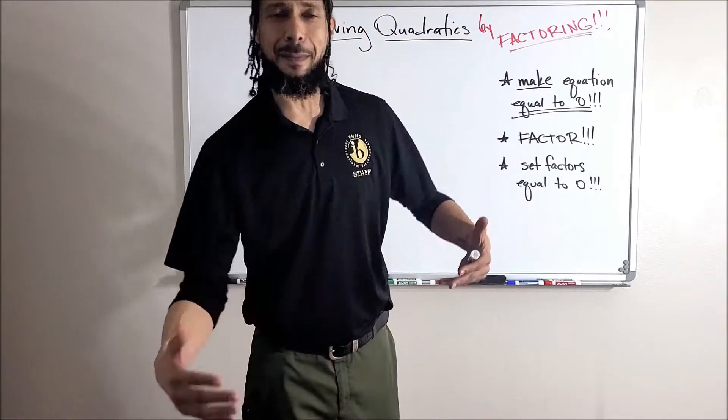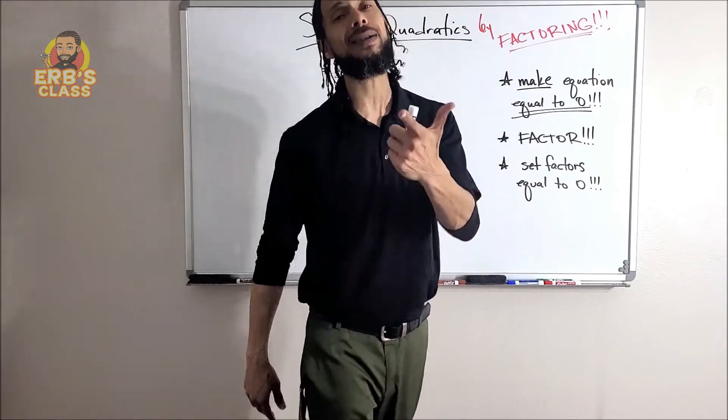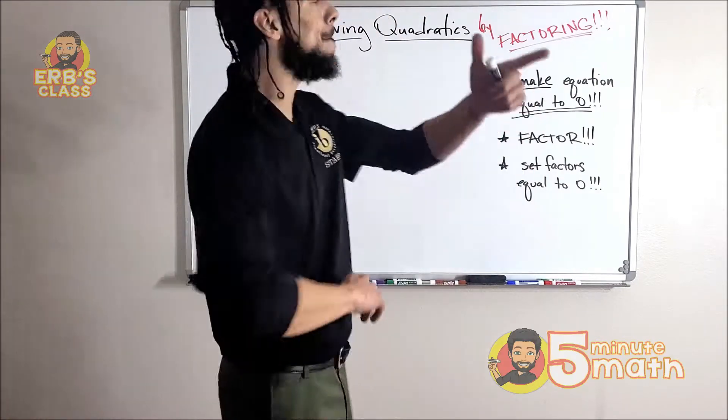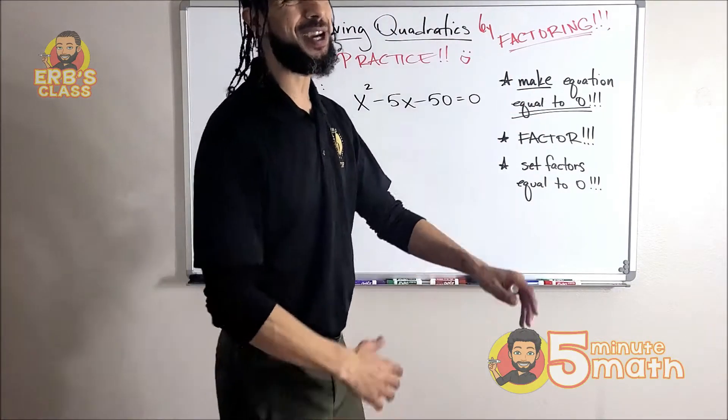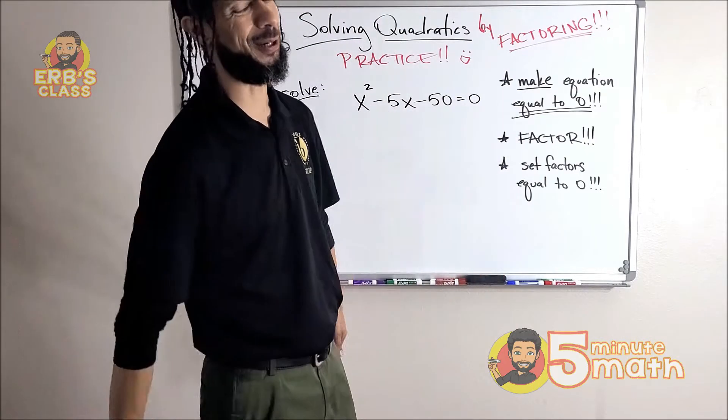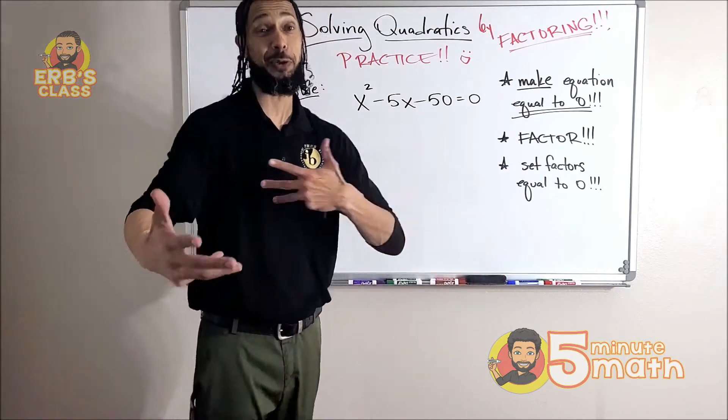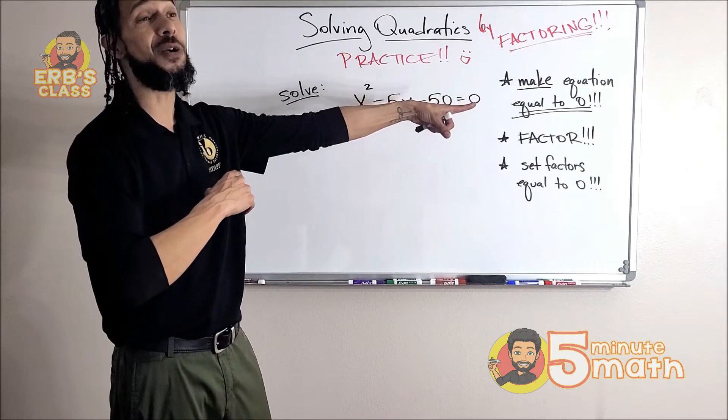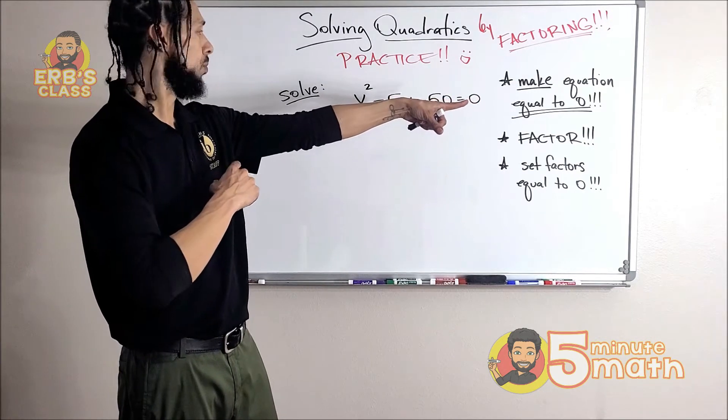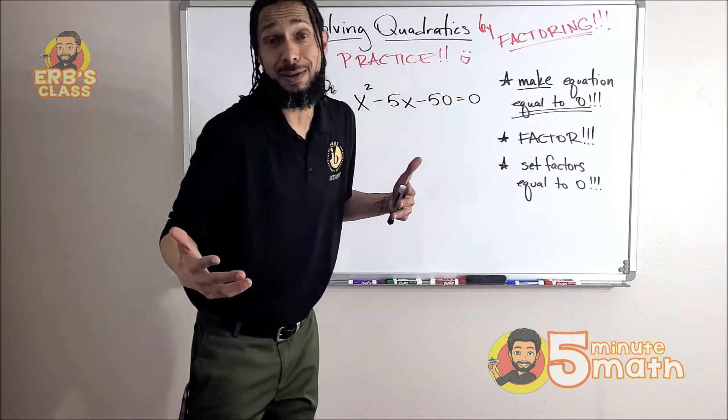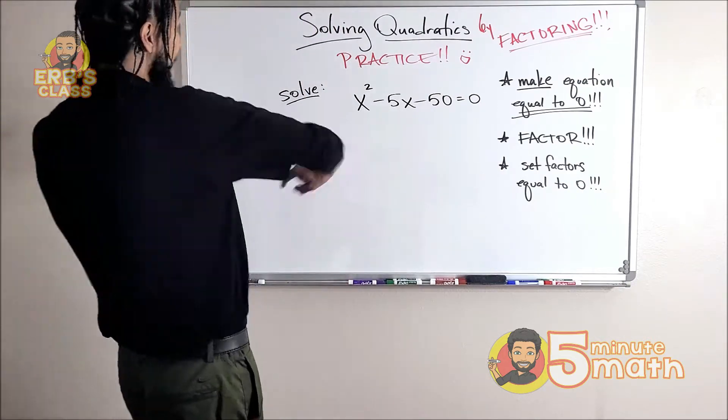What's up guys and welcome back. That was fast, good, because we're about to start this practice round. Okay, it looks like we're starting out a little bit slow, but all right, let's do it. First step: make the equation equal to zero. Well, my equation is already equal to zero. Okay, step two.